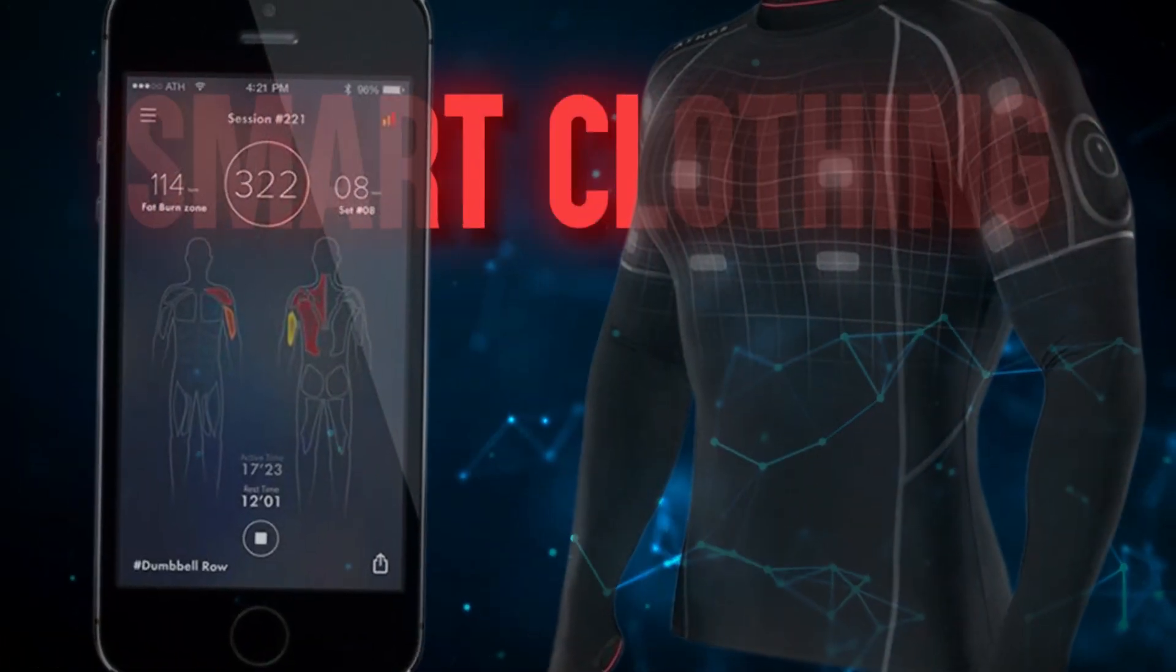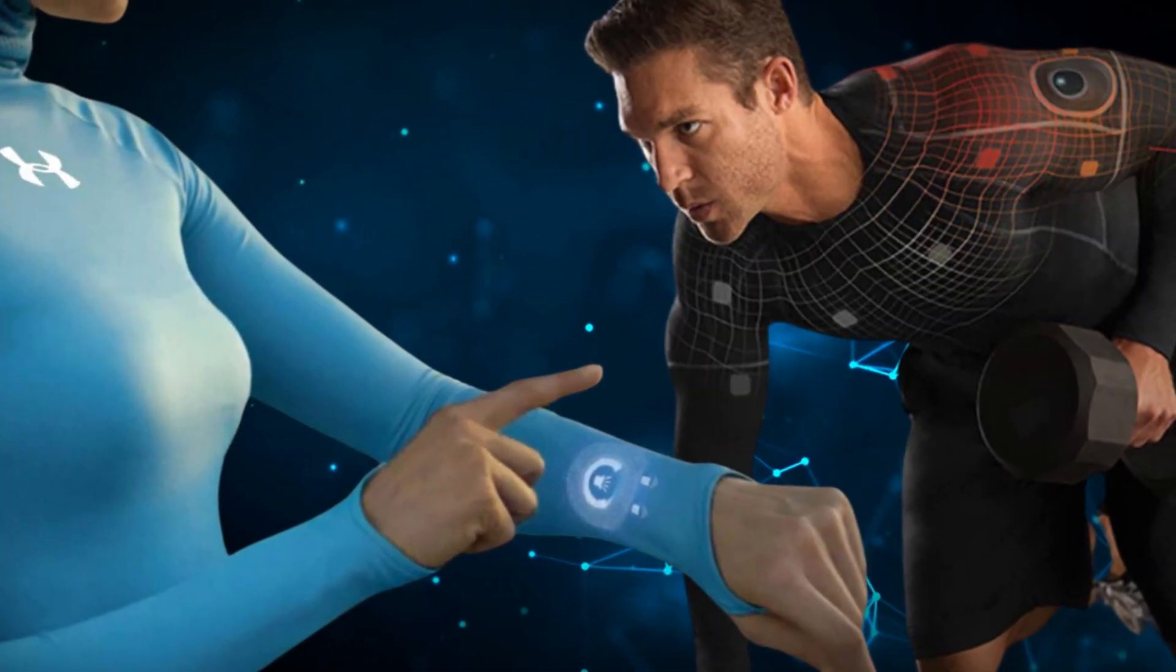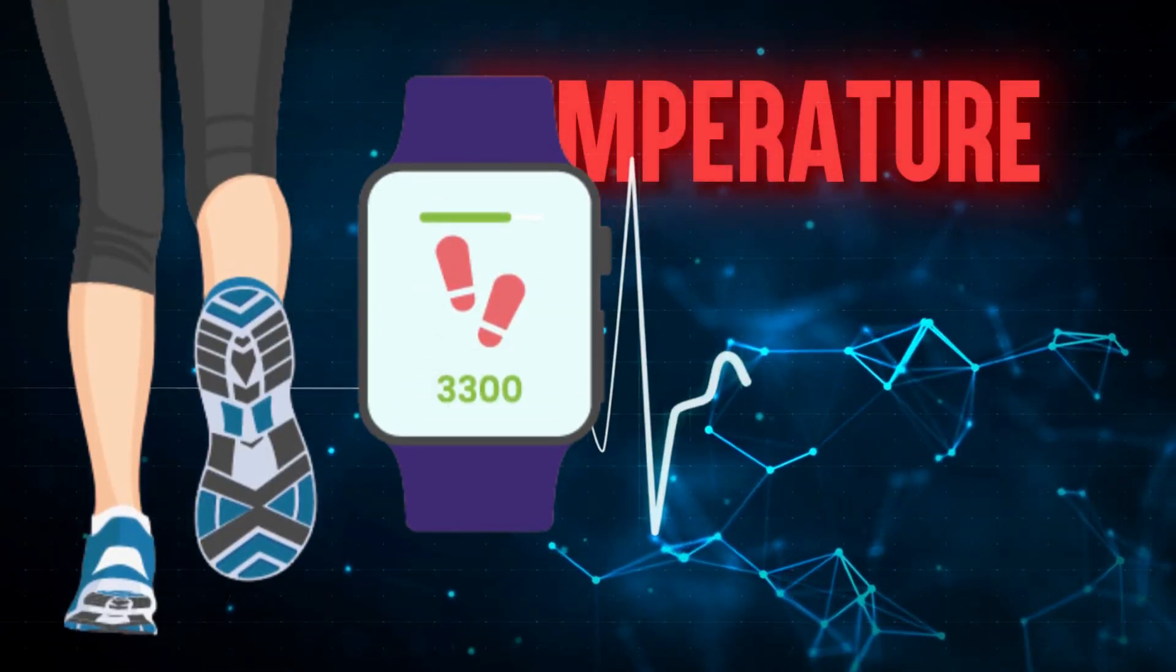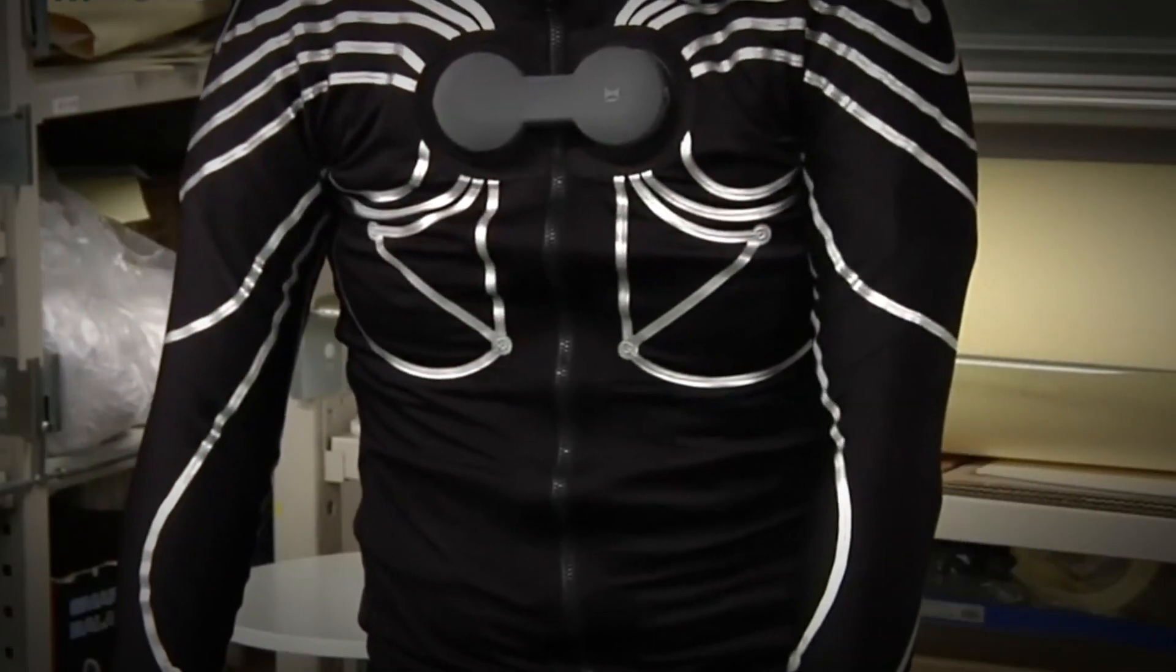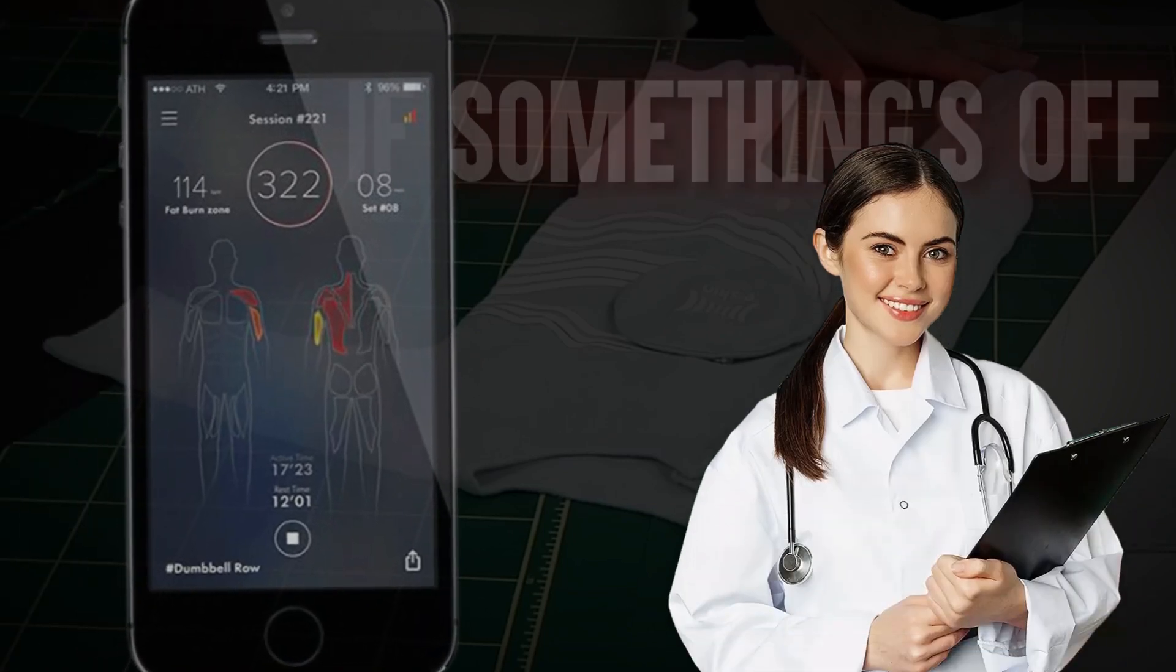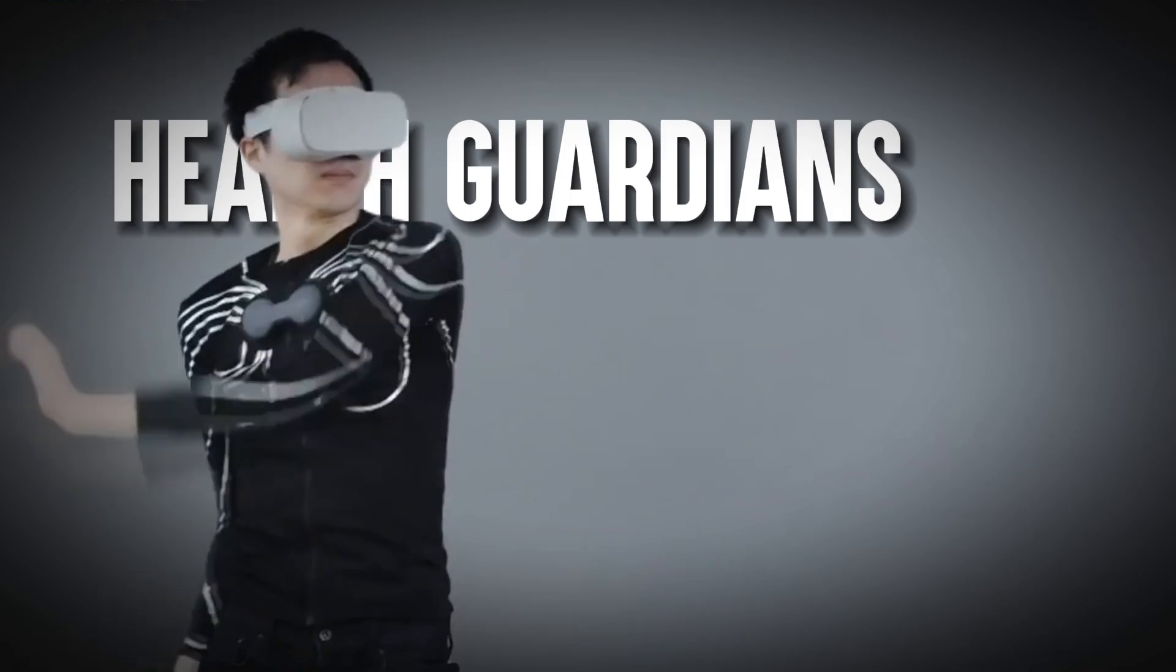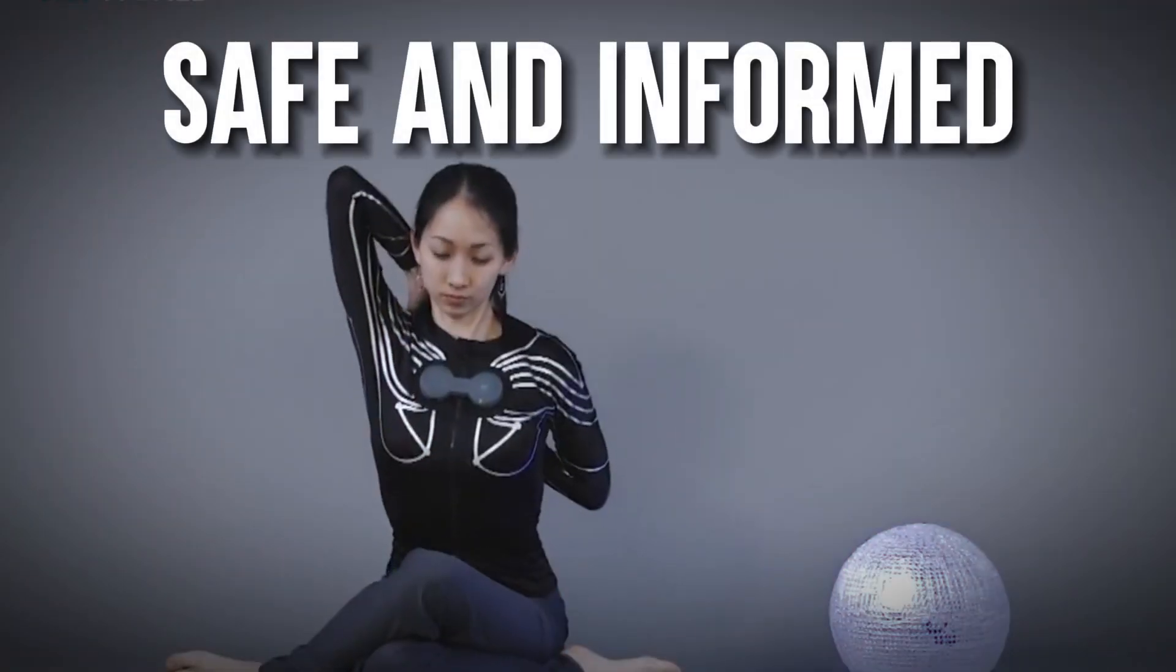Smart clothing. Imagine clothes that do more than look great. They monitor your health, tracking your heart rate, steps, and temperature. These smart outfits send vital info to your phone or doctor. If something's off, they alert you instantly. It's like your clothes are your personal health guardians keeping you safe and informed.